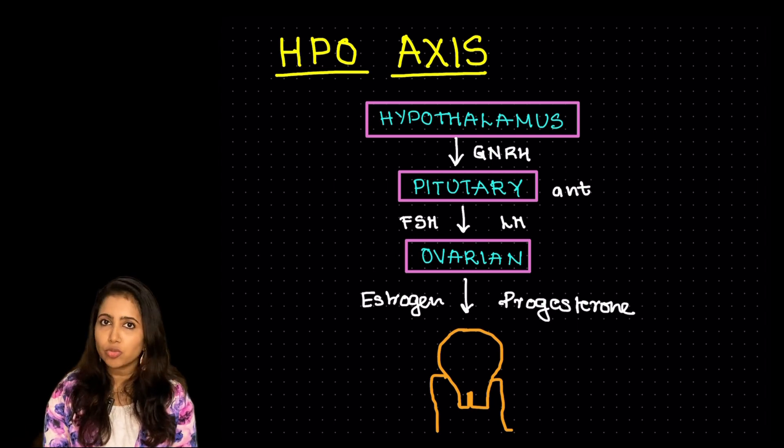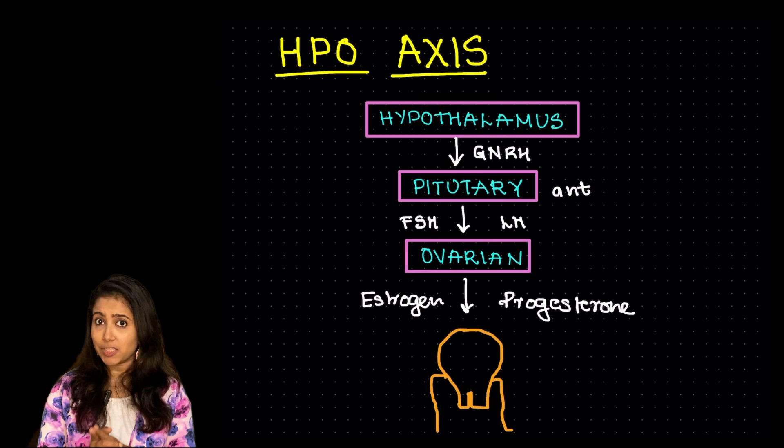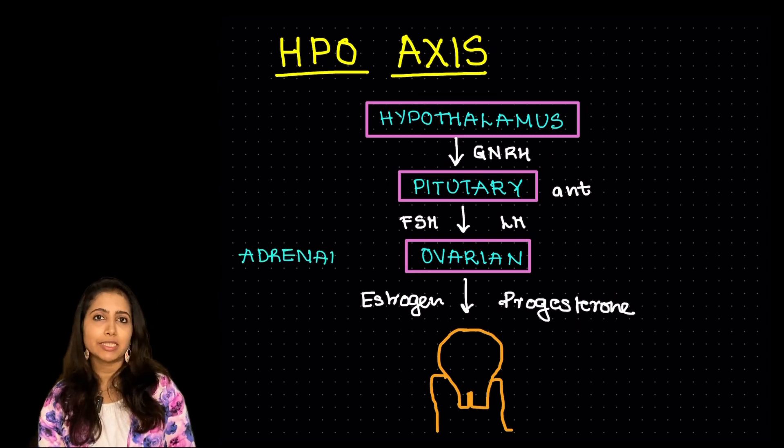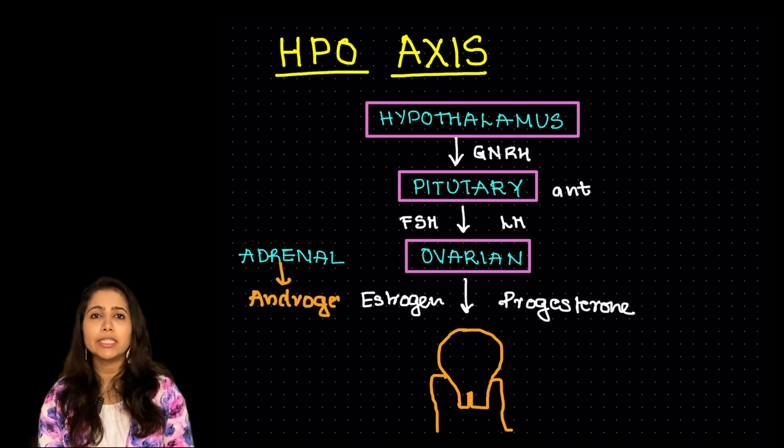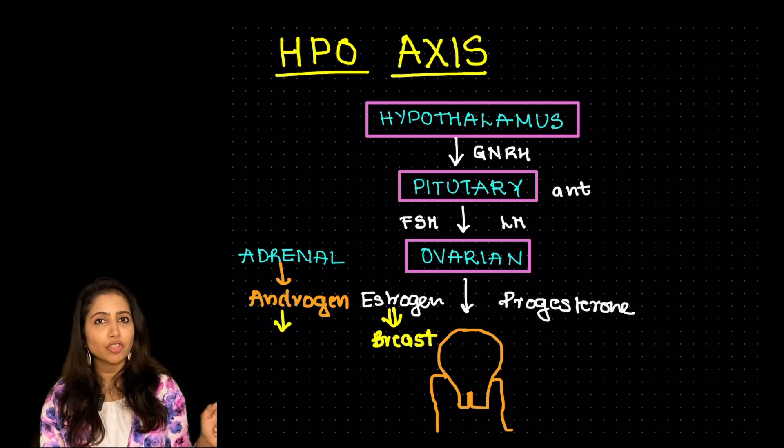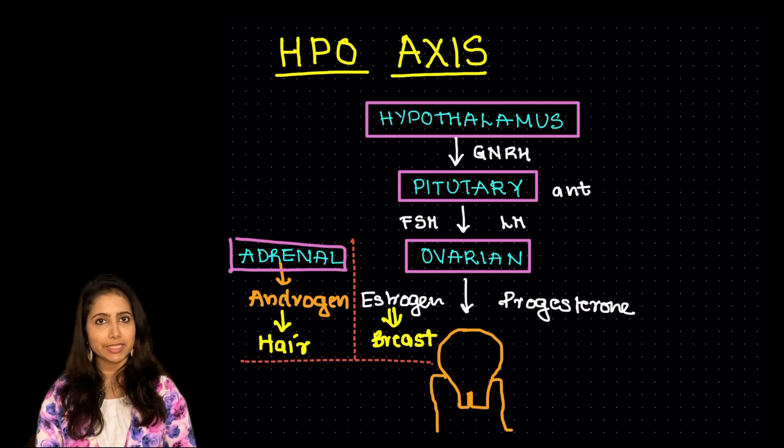This will act on the uterus so that the menses develops. Next is the HPA axis also known as hypothalamo-pituitary-adrenal axis and the adrenal glands would be producing the androgens. Please note that the estrogen is responsible for the breast development and the androgen is responsible for the development of hair that is the pubic and axillary hair.